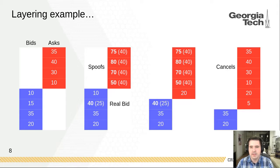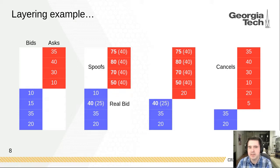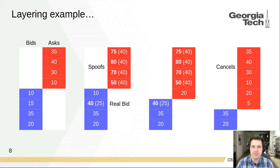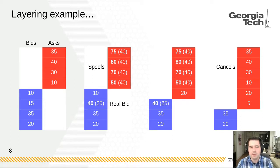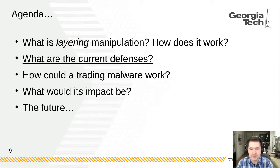Spoofing is illegal in the U.S., but because roughly 85 percent of orders made on the markets end up being cancelled, it's actually very hard to distinguish the intent of traders. And once you introduce a malware that can distribute spoofing over a large number of compromised accounts, the potential for manipulation goes up significantly.